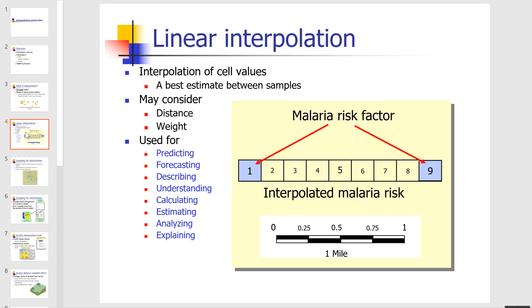In interpolation, you measure cell values and use them to predict a smooth surface that provides values both where measurements were made and where they were not. This example shows a malaria risk factor from one to nine — one being high influence and nine being less — so you can forecast where values will be high and where the factor decreases as you move further from the sample location.